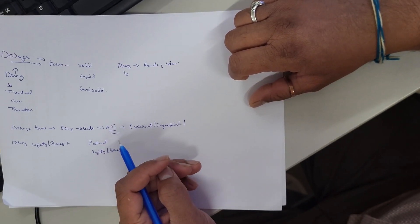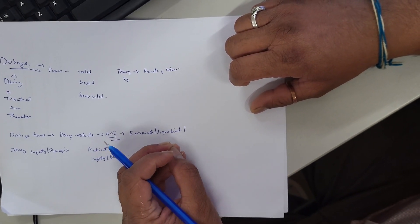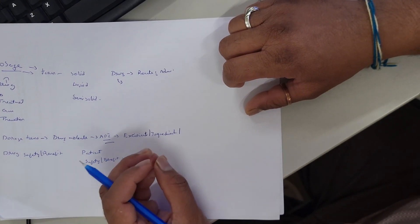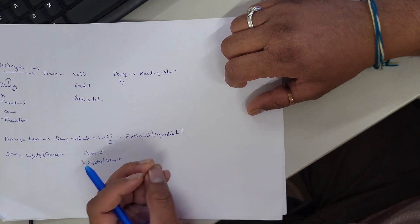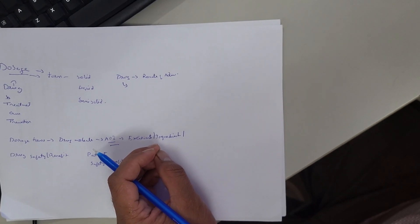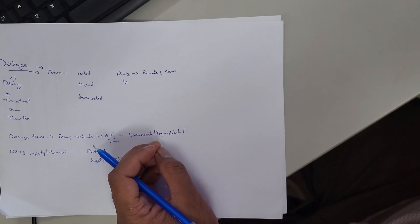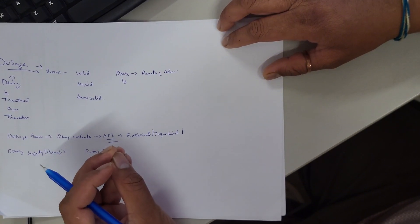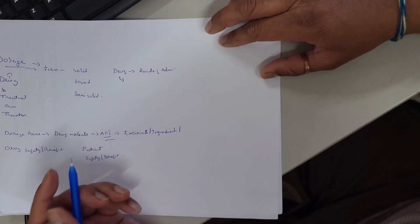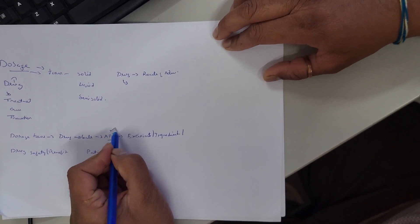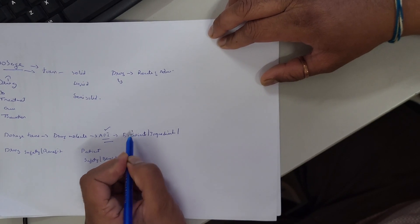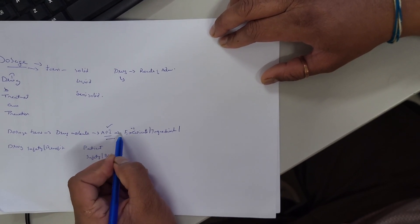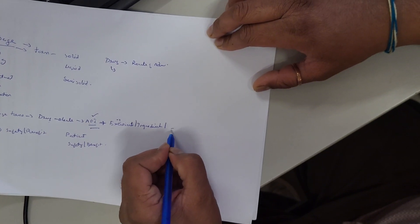A drug is a chemical compound used for diagnosis, treatment, and prevention of disease in human beings as well as in animals for veterinary use. Excipients do not affect the therapeutic activity present in the API. They are non-active components that, when combined with the API, form the dosage form.